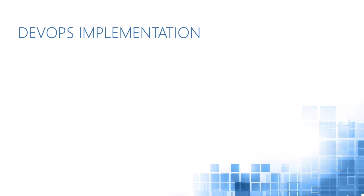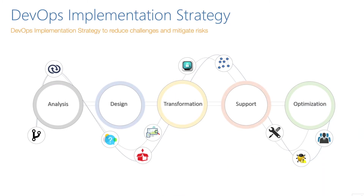Let's look at a typical DevOps implementation project — do we implement it from day one, or do we need a special team? The DevOps implementation strategy reduces challenges by mitigating risk. First of all, the DevOps team will do a particular analysis on the current state of a project — how it stands as of today.